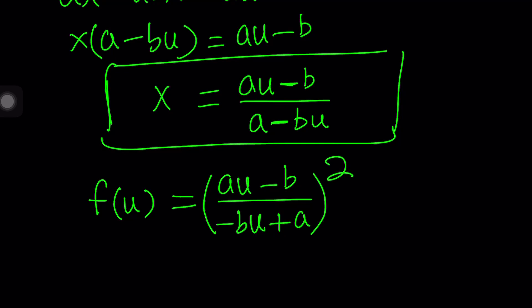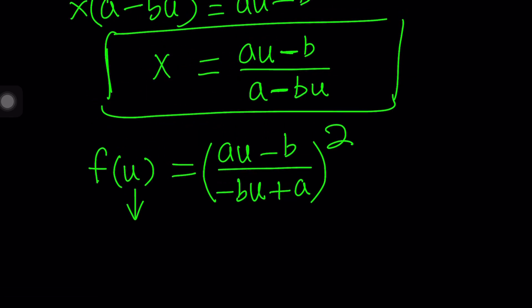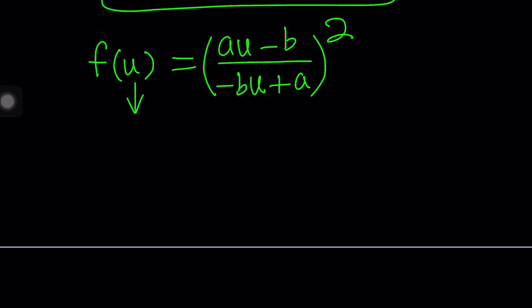Since we don't want to stick with this variable u, we generally use x. We can always replace u with x. That x is not the same as this x because we could use different x's for different things. Now this becomes f of x equals (ax-b)/(-bx+a), and the whole thing is squared. That's how we can express f as f of x.